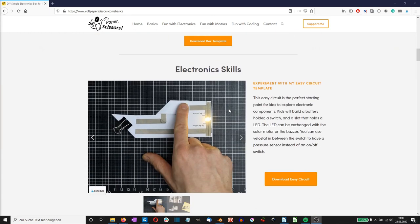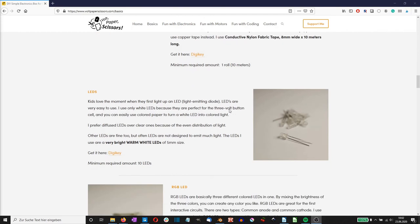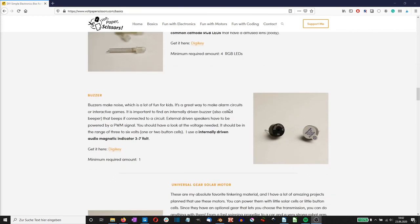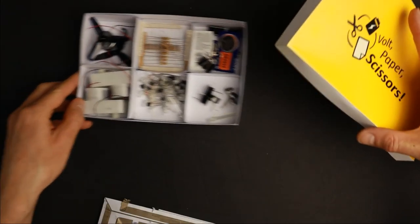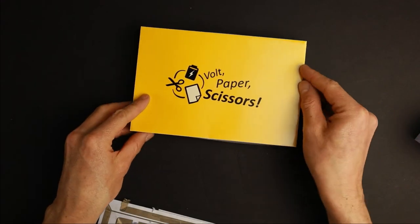I have made a complete list of needed components for paper circuits. So if you want to use the exact components I use, follow my links in the video description. You can even recreate my paper box for sorting everything.